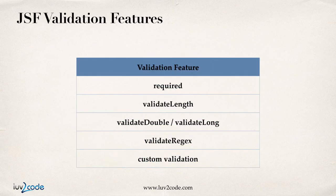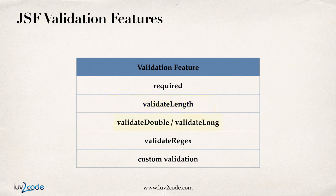The nice thing to know is that out of the box, JSF has built-in features for validation rules. Everything that I discussed previously, JSF has built-in support for. With JSF, you can check to make sure a field is required, validate the length of a field, validate if it's a number or long in a given range, and validate formatting by using regular expressions. And finally, there's support for adding your own custom validation rule. So all of these features are available in JSF.